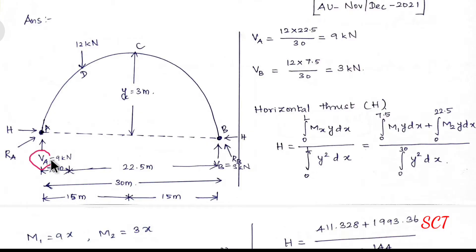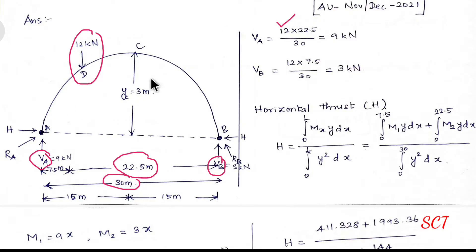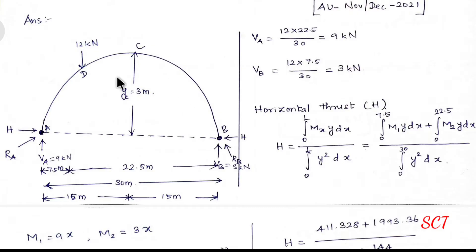First, we calculate vertical forces Va and Vb. For a single point load, Va and Vb are easy to find. Load into the other distance divided by total span. Va equals 12 times 22.5 divided by 30, which equals 9 kN. Vb equals 12 times 7.5 divided by 30, which equals 3 kN.